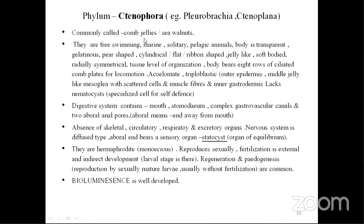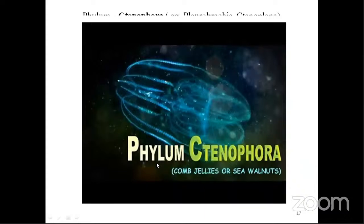Bioluminescence is well developed in ctenophores — they can emit light. Examples are sea walnuts and comb jellies. You can see in the diagram that this organism can illuminate — it is bioluminescent.